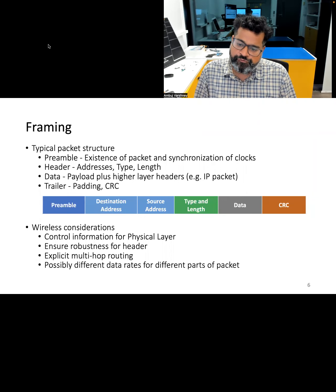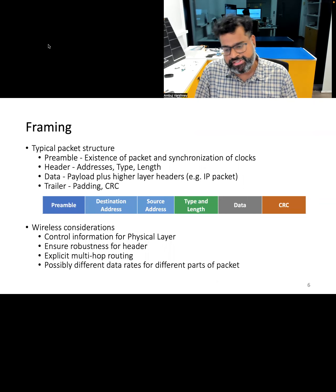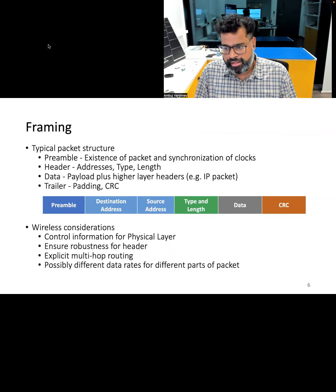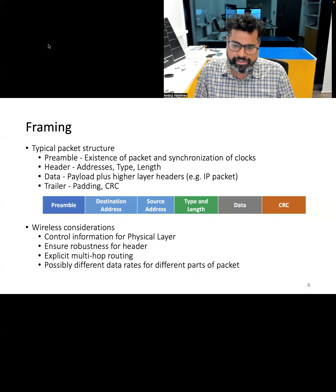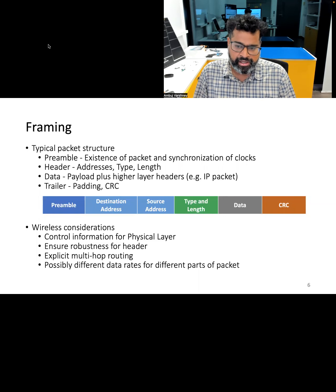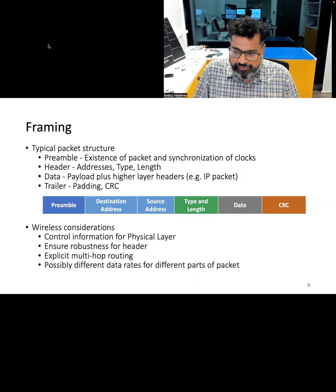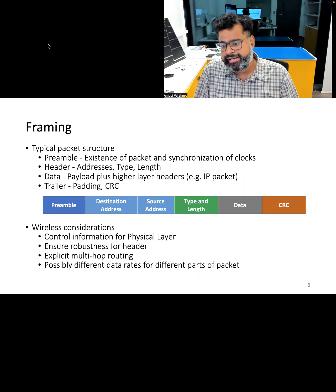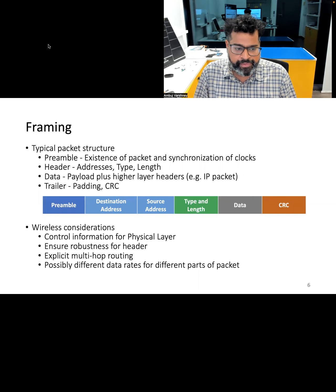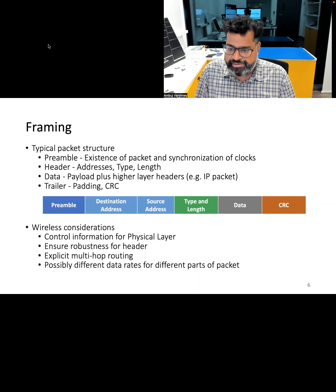Framing involves the organization of raw data into structured packets known as frames. A typical frame consists of a preamble, which synchronizes the transmitter and receiver for accurate data transmission. Next, the frame consists of header fields containing crucial information like source and destination address, frame type, length, and other metadata used for routing. Finally, we have the data payload, which carries the actual data being transmitted.